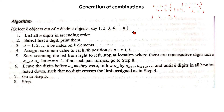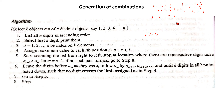Start scanning the list from right to left. First, print the three numbers 1, 2, 3. Then start scanning from right to left and stop at the location where there are consecutive digits such that a_{n-1} < a_n. Let m equal n minus 1. If no such pair is found, stop.